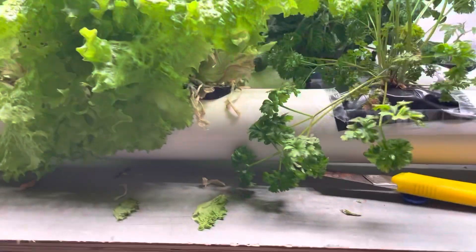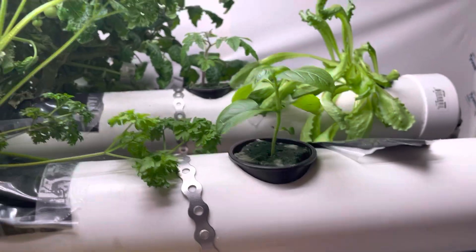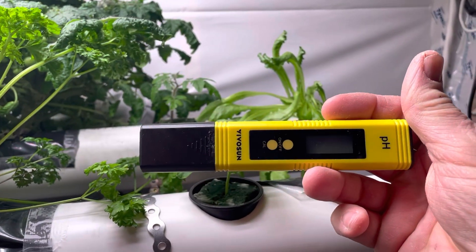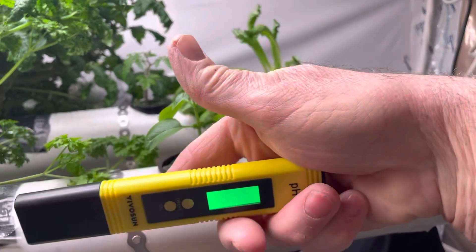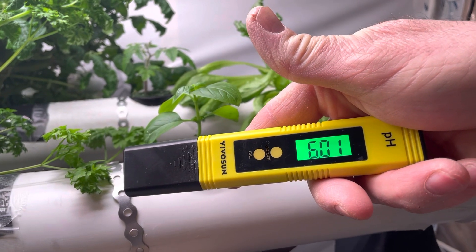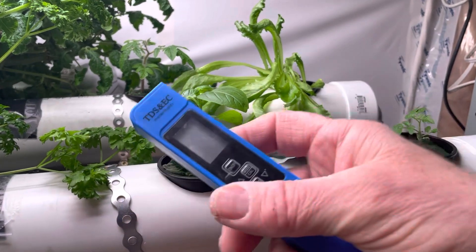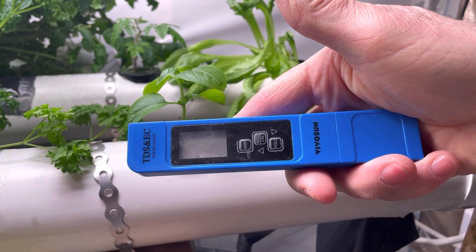Before we were using color strips for testing our pH. Well, now we invested in this guy right here, this guy right here. This is a digital pH meter, so you can keep track a lot closer to our water conditions. And this here measures your parts per million particles in our water.